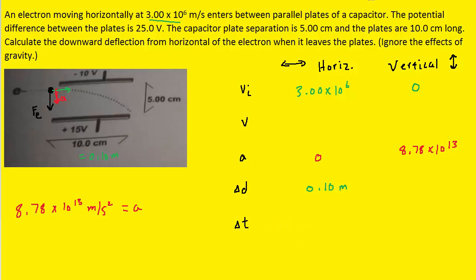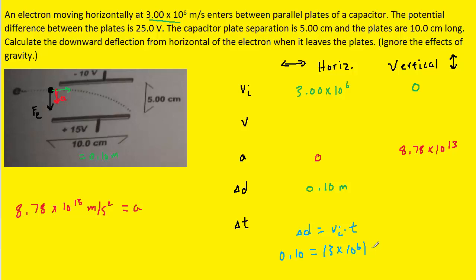To find the time, we use the horizontal kinematic equation: displacement equals initial velocity times time plus one-half times acceleration times time squared. Since horizontal acceleration is zero, that term drops out. Plugging in the horizontal displacement and initial velocity and dividing both sides by 3×10⁶, we get a time of approximately 3.33×10⁻⁸ seconds, which is the same time used for the vertical direction.